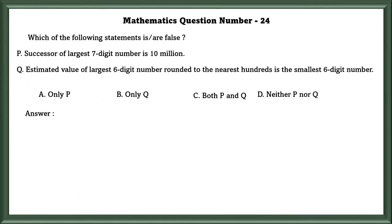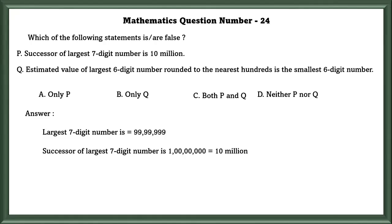Mathematics question number 24. Which of the following statements is true or false? Statement P: the successor of the largest 7-digit number is 10 million. The largest 7-digit number is 99,99,999. The successor of that digit is 10 million. Yes, that is true.